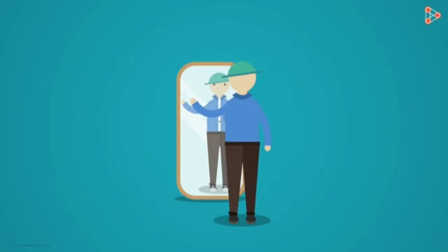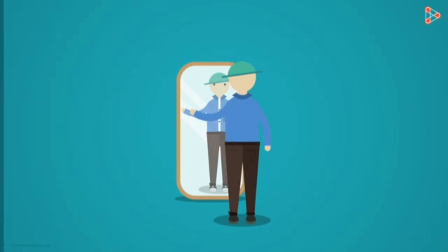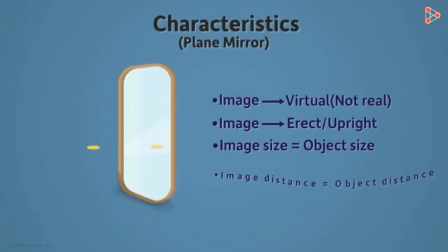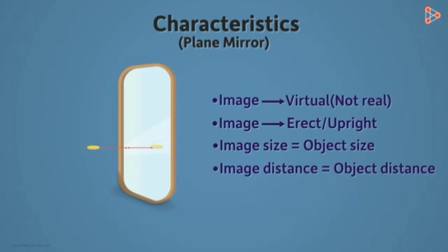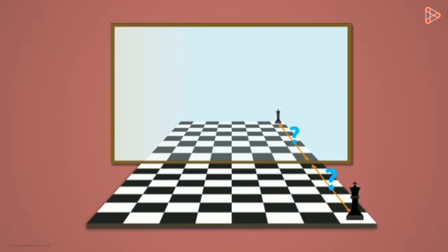Another important peculiarity of a plane mirror: when we raise up our left hand, the object we see in the mirror appears to raise its right hand. When we raise our right hand, the image raises its left hand. This peculiarity is known as lateral inversion. Also, if the object is at a distance of 5 cm from the mirror, we can see the image formed at 5 cm distance.